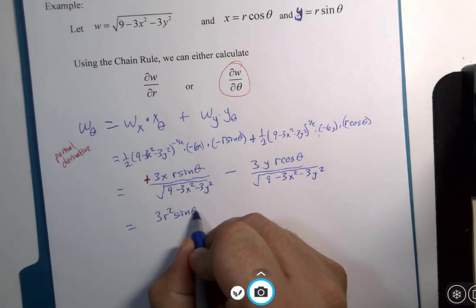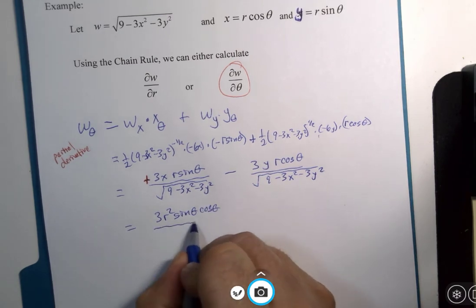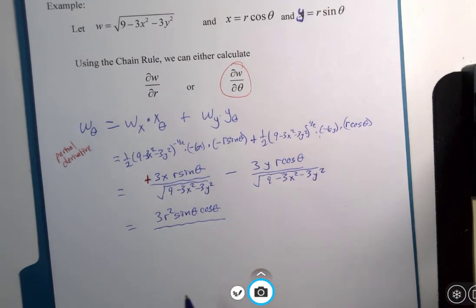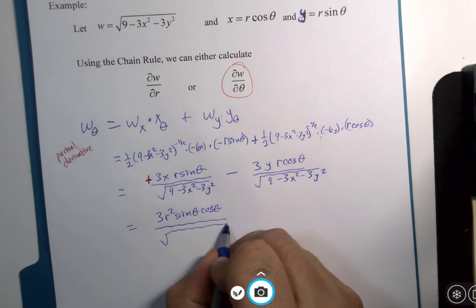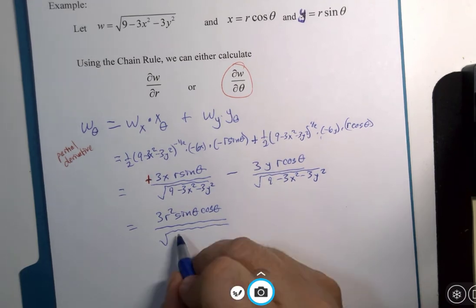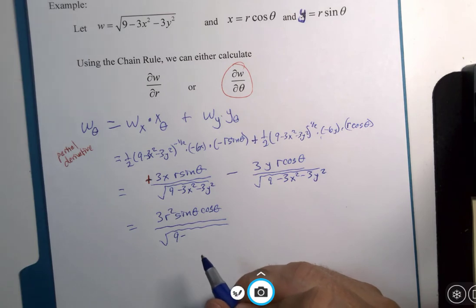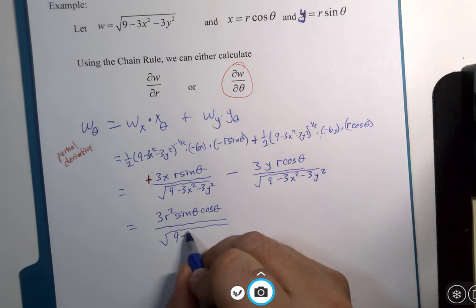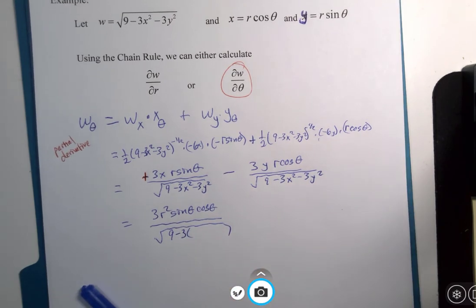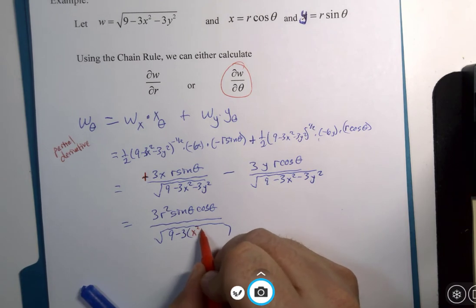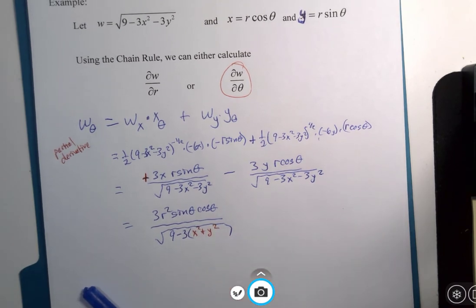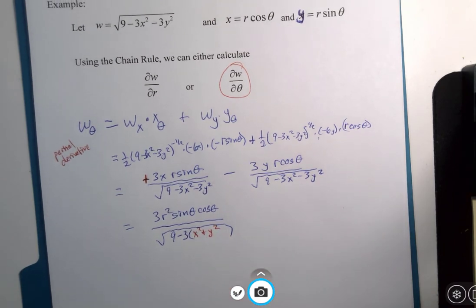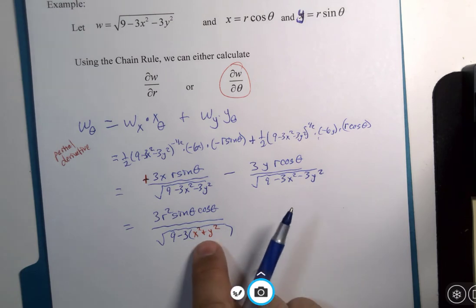Over a square root that I still have to reduce. Nine minus, oh, you know what I'm going to do here, three x squared plus y squared. You guys remember what that is, don't you? That's r squared.